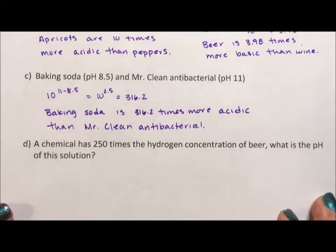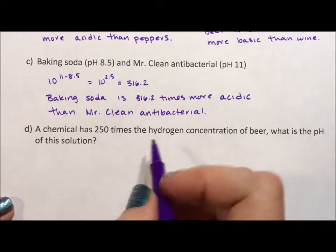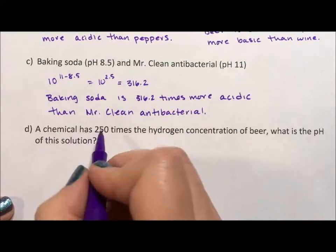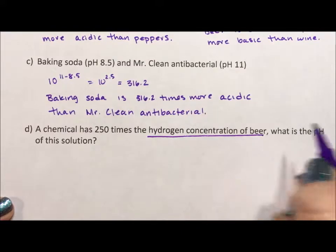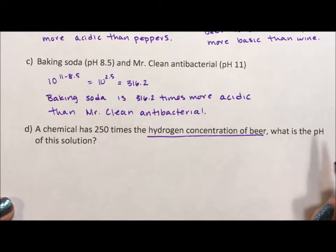All right and then for our last one we're going to talk about something that has a chemical has 250 times the hydrogen concentration of beer. Again hydrogen ion concentrations are based on 10 to an exponent.